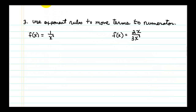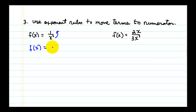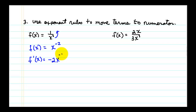Skill 2: none of our rules handle having an x in the denominator — our most common rule requires x to a power in the numerator. We use exponent rules to move x's to the top: if we move a term to the other side of a fraction, we change the sign of the exponent. So we rewrite 1 over x squared as x to the negative 2, which fits the power rule. Then f prime of x equals the old exponent times x, subtract 1 from the exponent. Negative 2 minus 1 is negative 3.